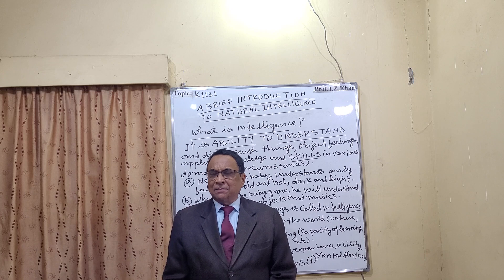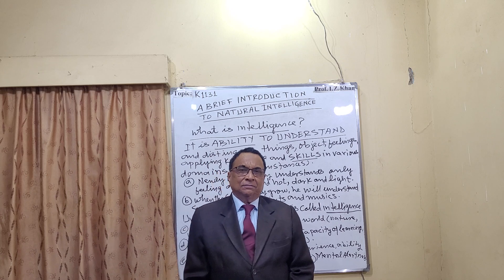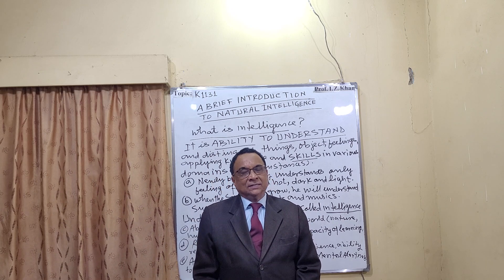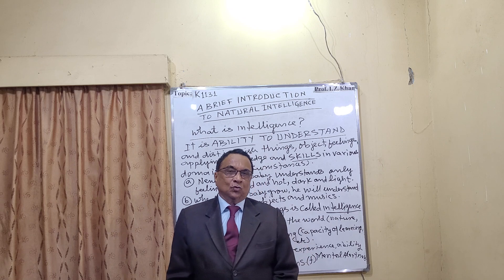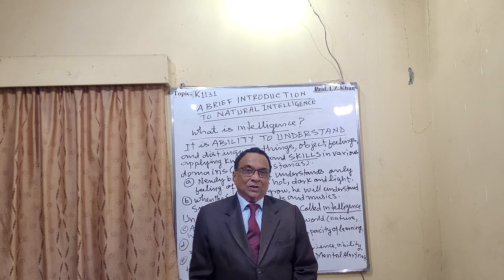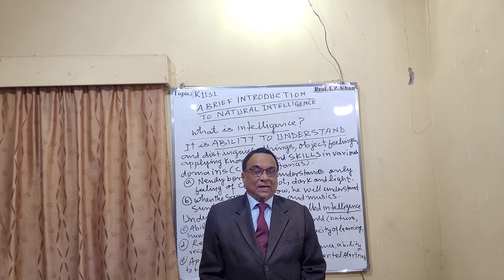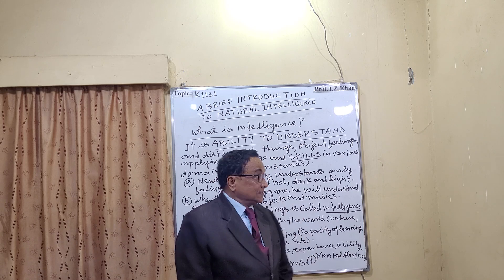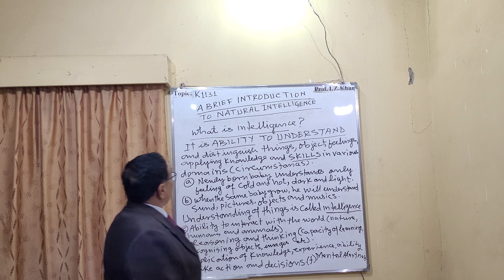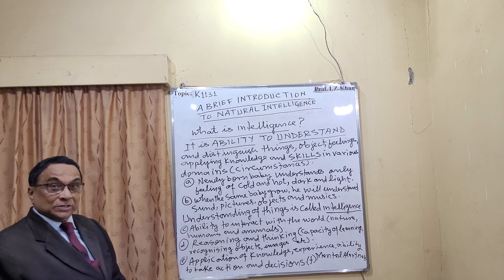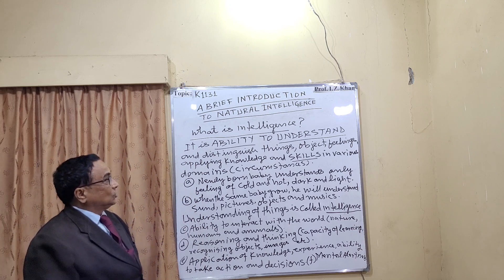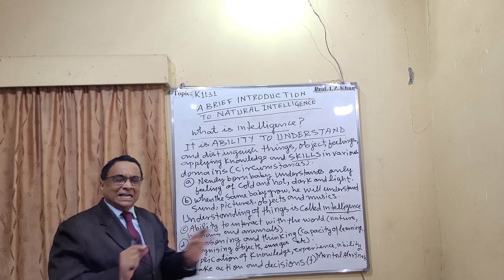Intelligence is the sum total of your ability — how to handle situations, how to live in this world, how to interact with nature, with humans, with other animals, with the environment. That is going to determine your intelligence. First: it is the ability to understand. If you don't have the ability to understand your parents, society, country, nature, or environment, you are not intelligent.